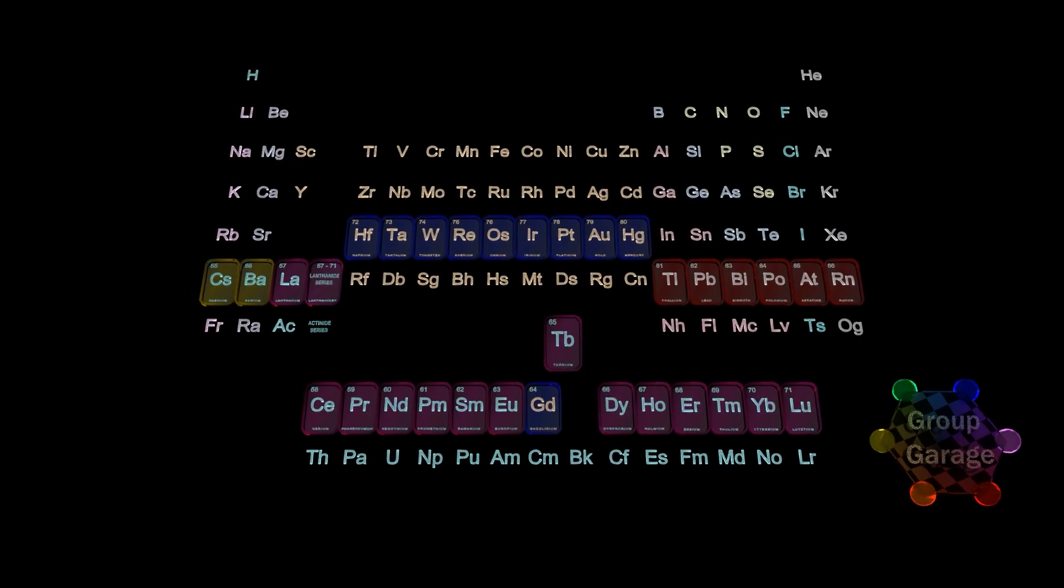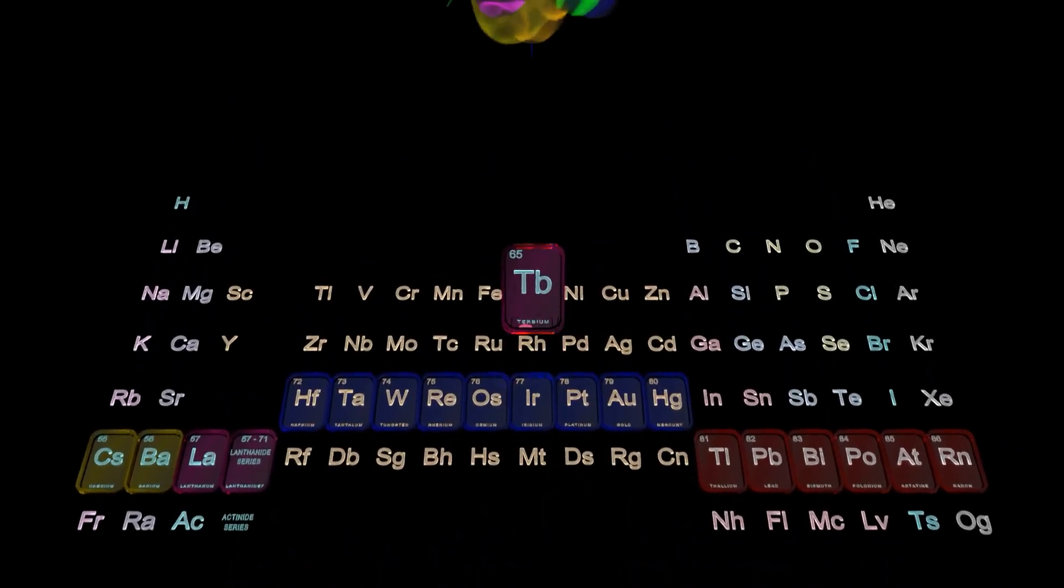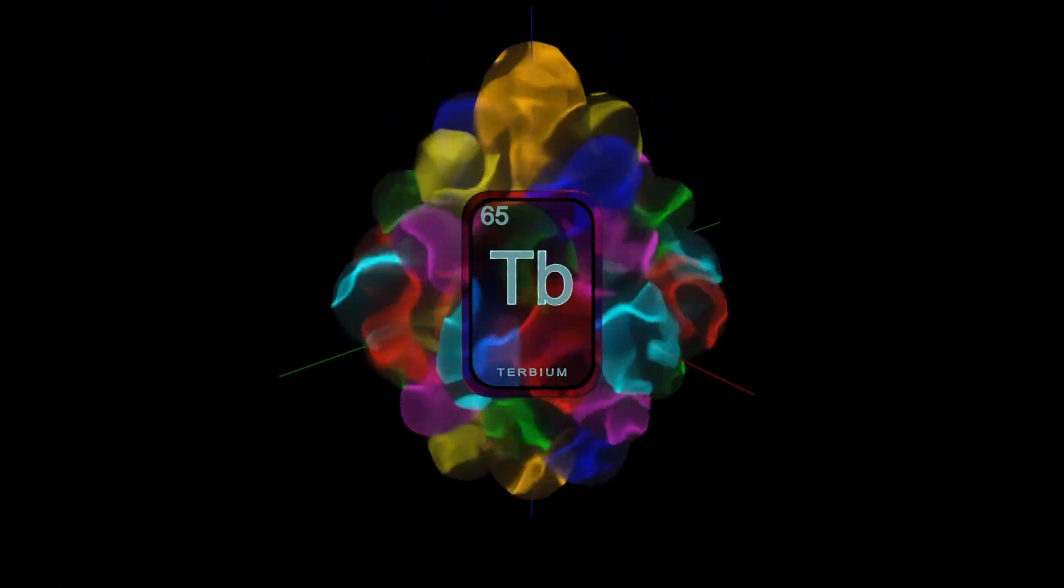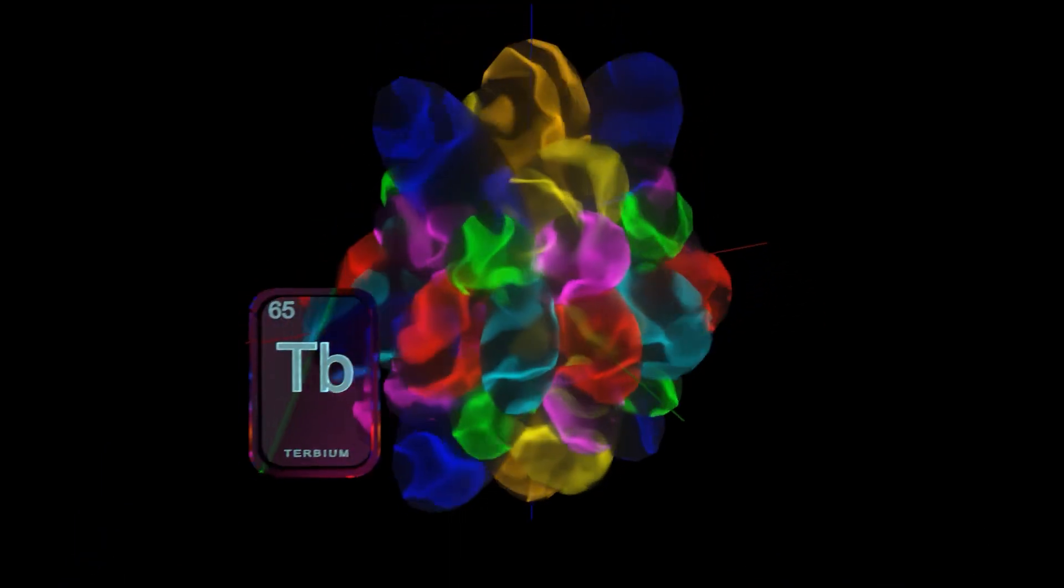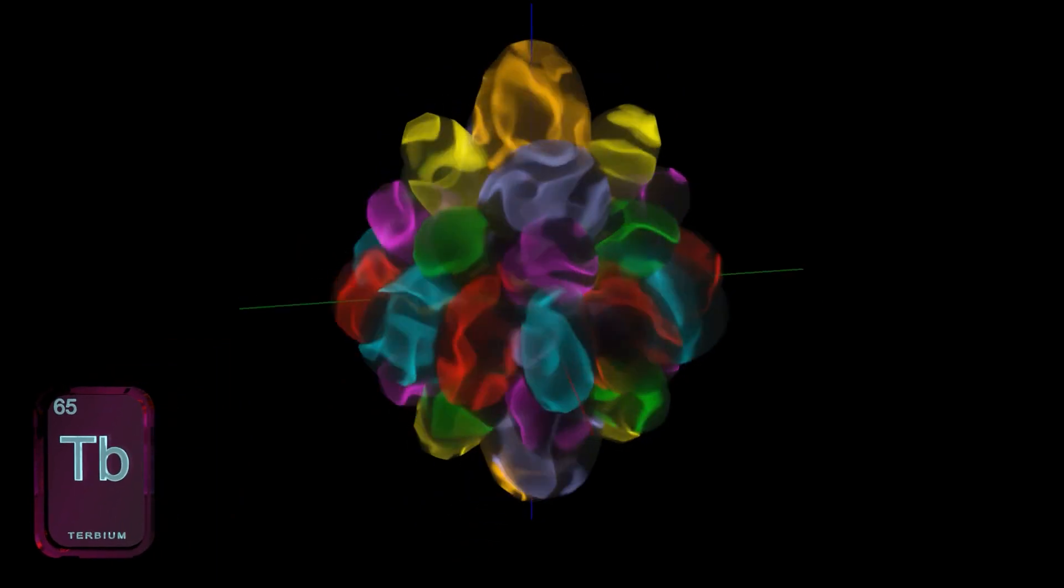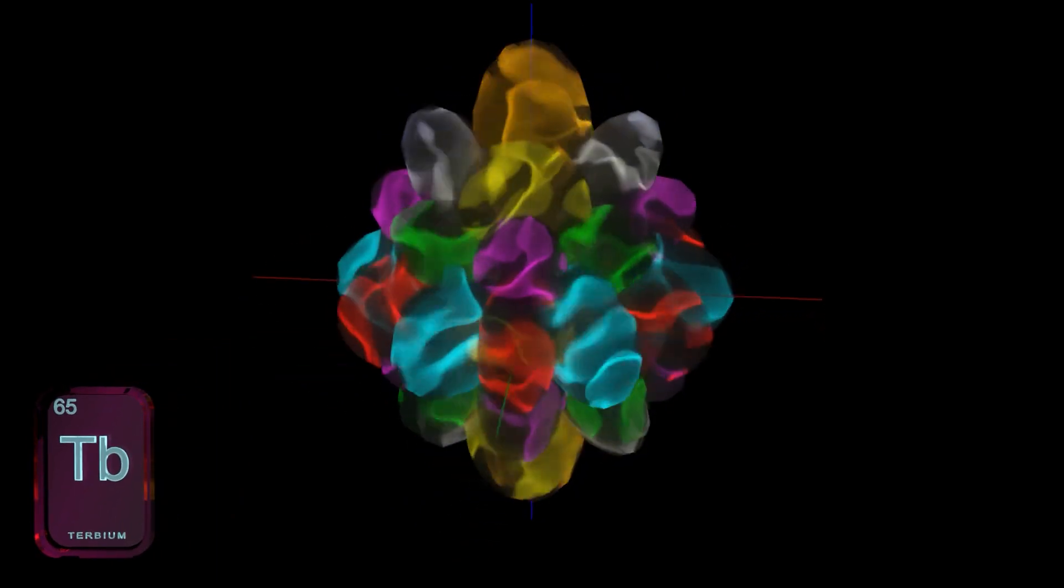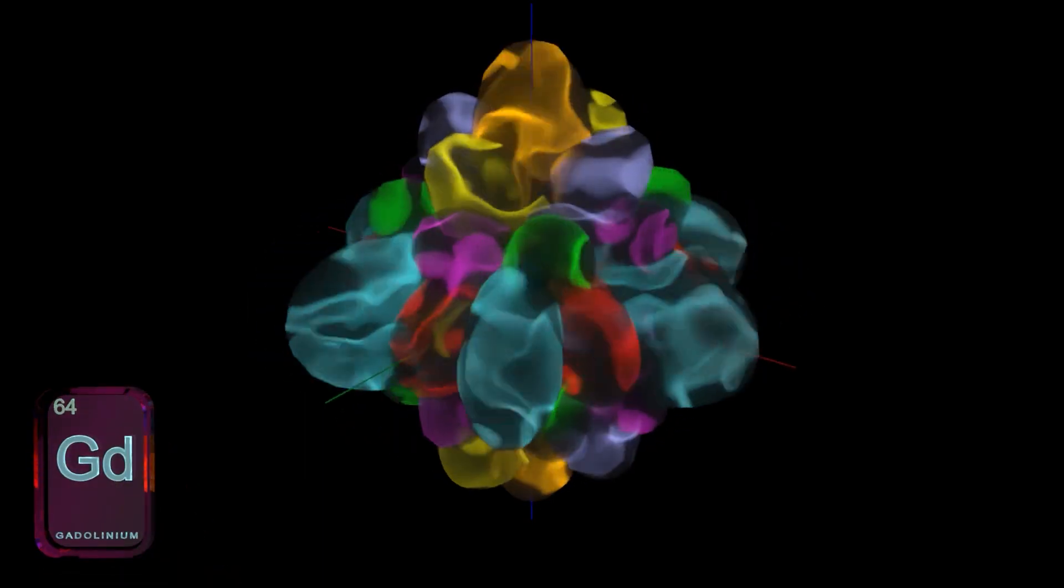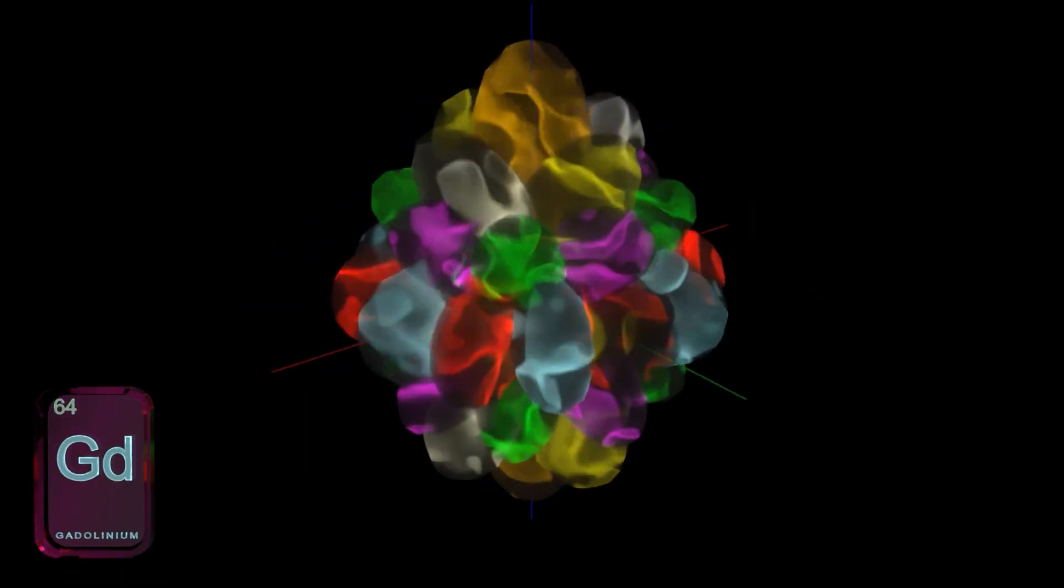Gadolinium, unfortunately an exception. This electron will backfill the 5d1 orbital and not occupy an f orbital to maximize spin. However, next is terbium. This goes into the 4f8 orbital. Then, dysprosium, the electron moves from the 5d orbital into 4f9.